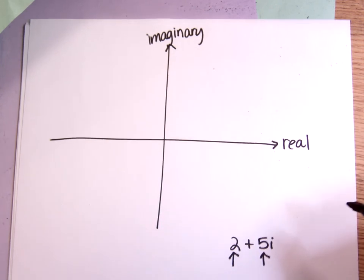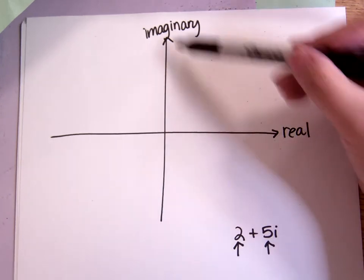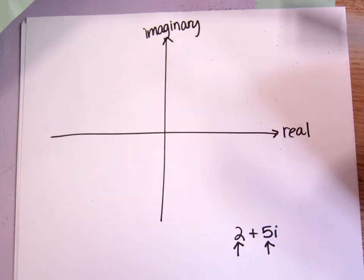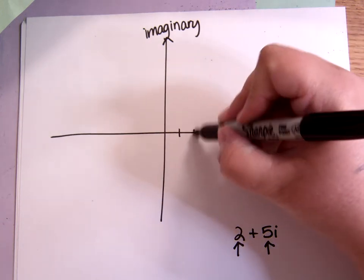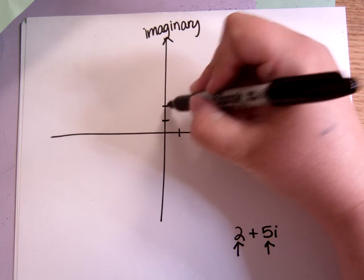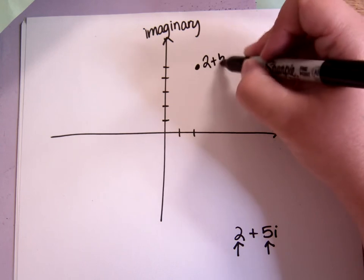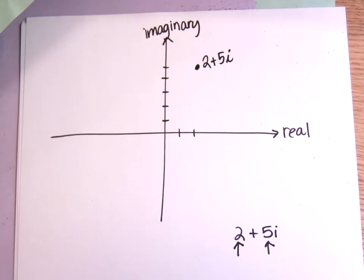You don't really have to do anything with the i. The i is understood on the vertical axis. So in other words, I go 2 to the right, and then up 1, 2, 3, 4, 5, and that's where 2 plus 5i would be graphed.